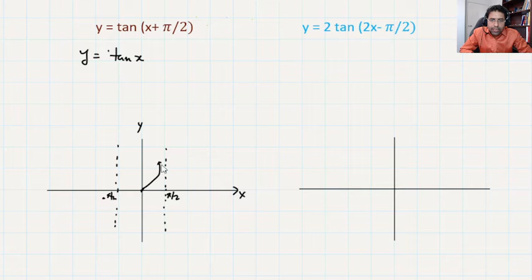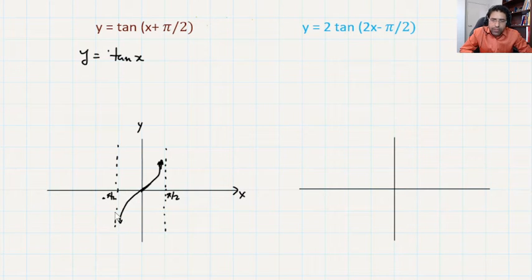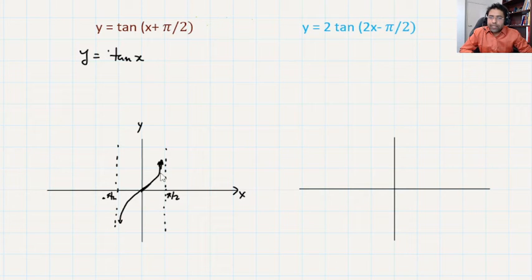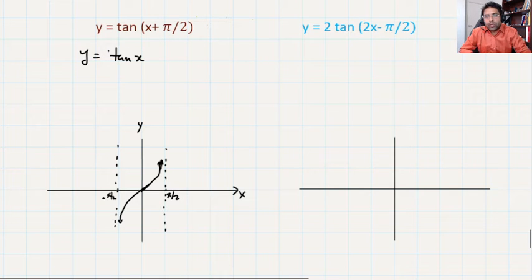The graph goes to close to infinity as it reaches near that asymptote, and then coming from the other side it goes to negative infinity when approaching that point. That is for tan(x) — I'm drawing it in black so you can easily distinguish it as our parent graph. Now if we do tan(x + π/2), what is going to happen?